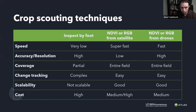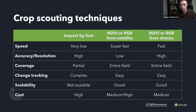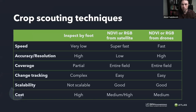If we inspect by foot, the speed of inspection is very low because one needs to approach certain spots on the field by foot — it's not always possible to use a car. At the same time, when you approach a certain location you get the most possible information, so the accuracy and resolution is very high. But the coverage is low — partial — because you cannot cover the entire field. Change tracking is very hard, and the method is not scalable: to scale, you need more people, so the cost is pretty high.